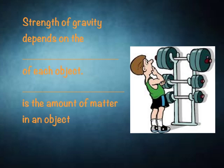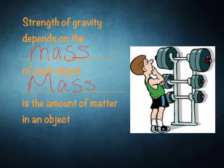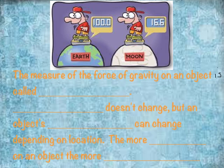There are different factors that affect gravity, and gravity's not the same everywhere. For example, we've seen pictures of astronauts floating in space, and when they walked on the moon it was kind of like they were hopping. So the strength of gravity depends on the first thing, which is the mass of each object. Mass is the amount of matter in an object. Each of these weights has a different amount of mass.